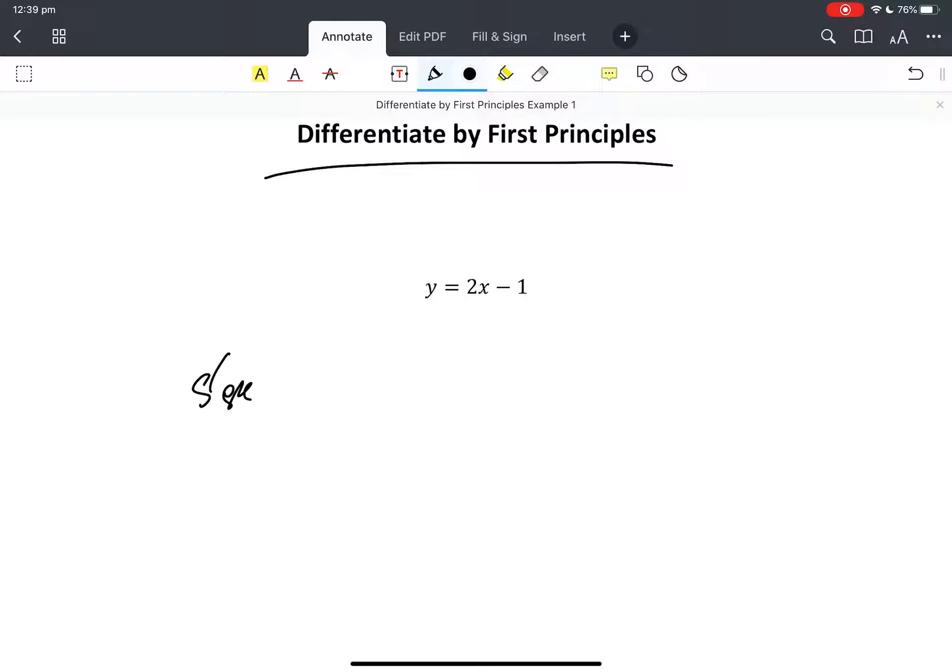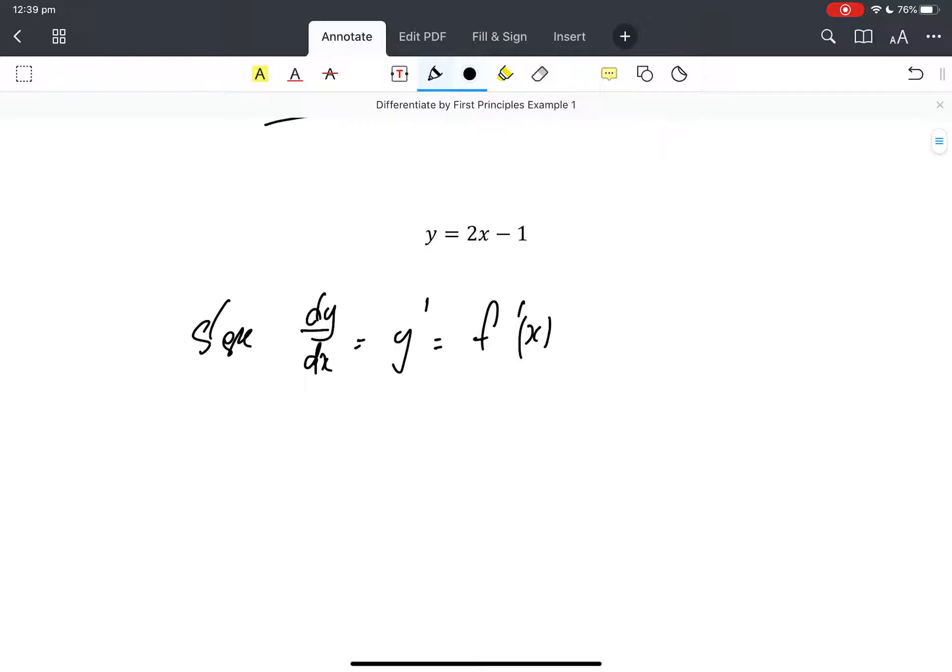We're going to call slope lots of different things. We can call it dy/dx, we can call it y dash, we can call it f dash x. There we go, lots of things. But anyway, let's go.